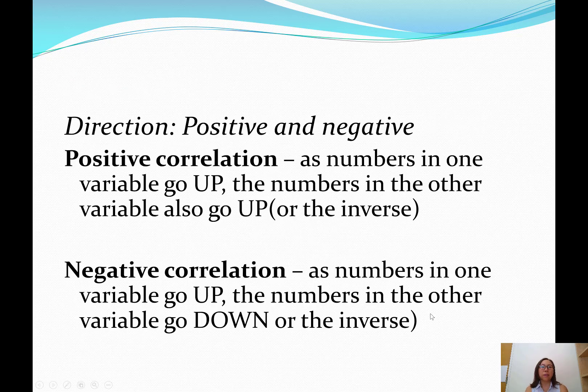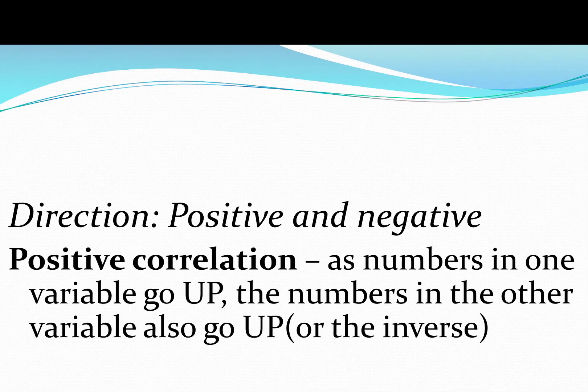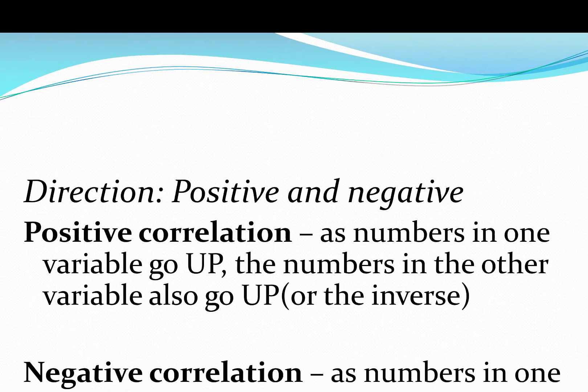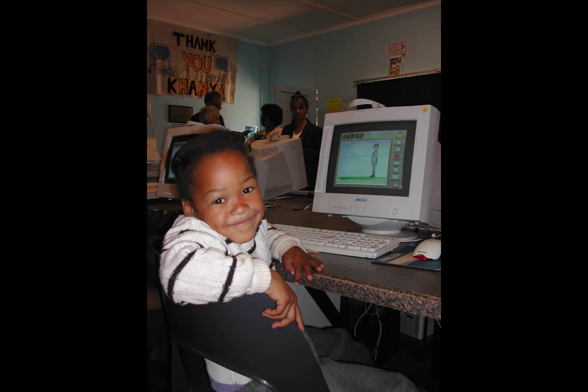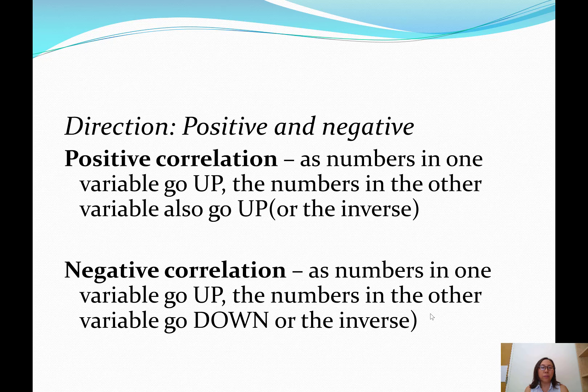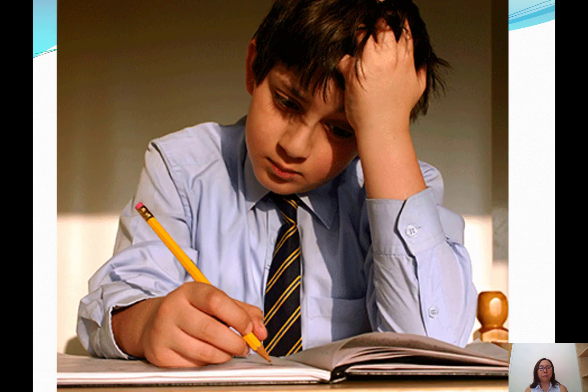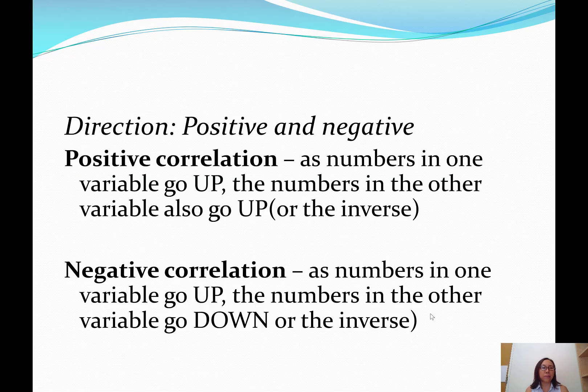There's positive and negative direction to a correlation. Positive correlation is such that as numbers in one variable go up, the numbers in the other variable also go up. A good example would be the number of hours a child spends on homework and how that correlates to high scores on exams. They go up together. The inverse may also be true. The less number of hours the child spends on homework, the lower the scores may be. That's an example of a positive correlation.